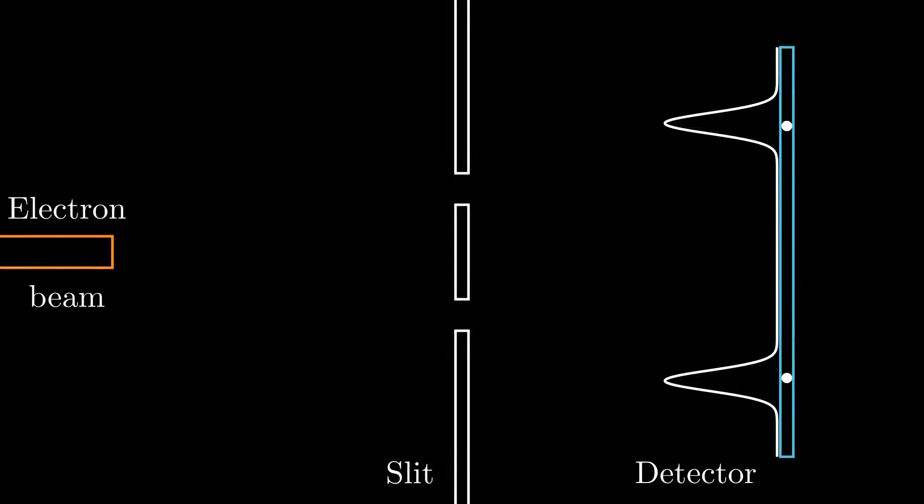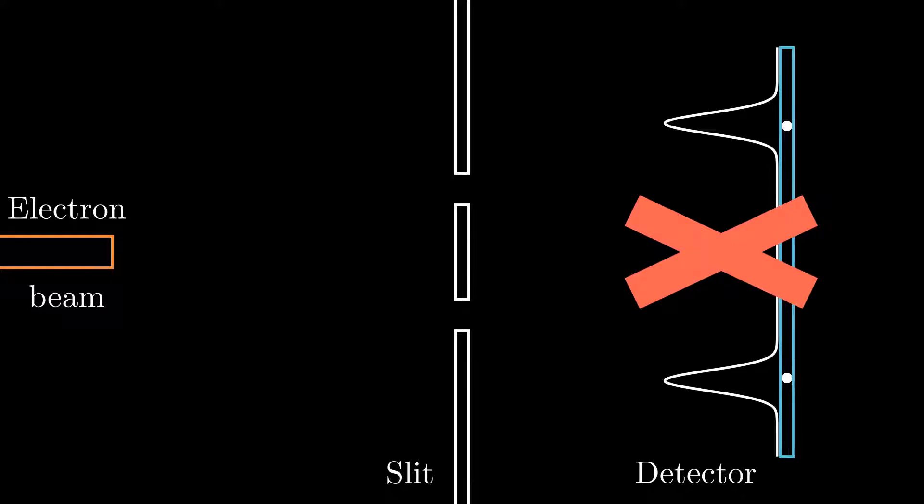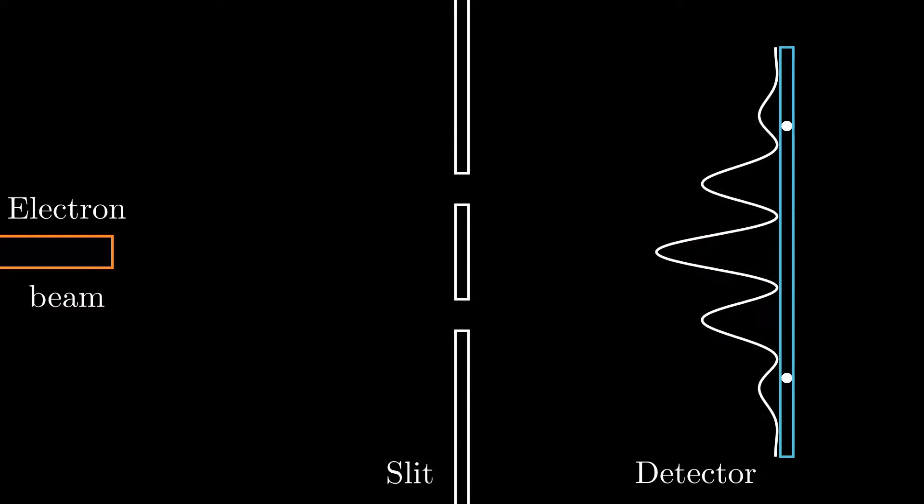However, what we observe is that the electrons travel as waves through both slits, creating an interference pattern at the detector.